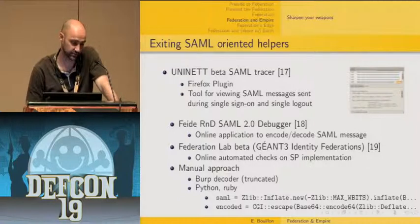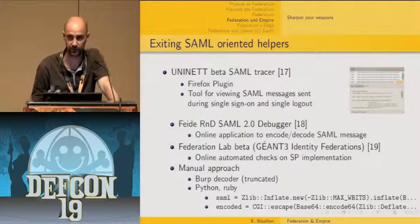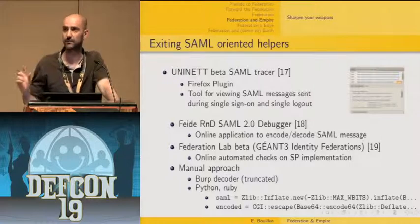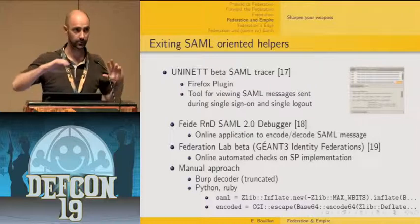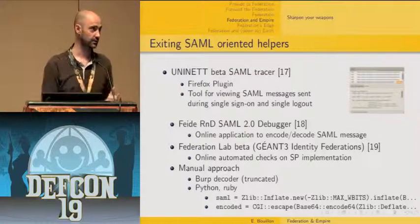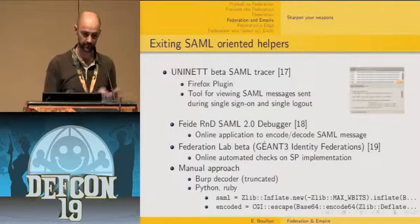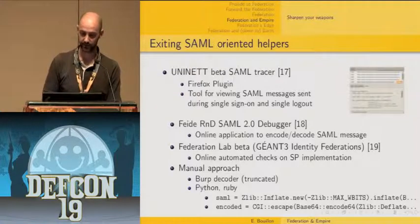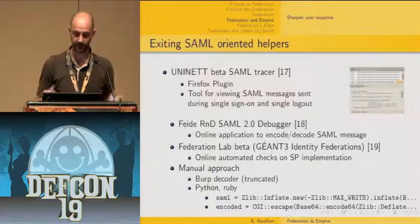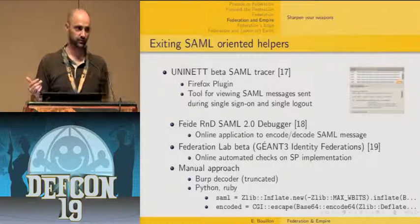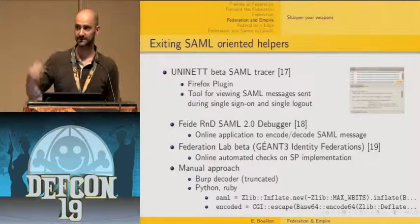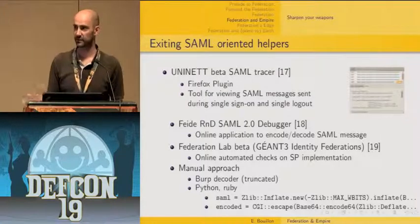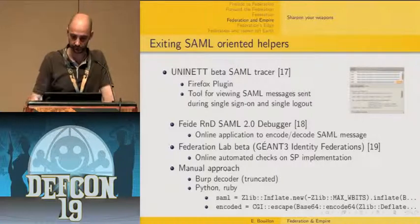There are already some existing tools that can help pen testers when dealing with SAML. First, the UniNett SAML Tracer, a Firefox plugin that allows you to see decoded SAML tokens your browser is receiving and sending. Then there's the Feide SAML Debugger, an online application where you submit a token either encoded or decoded and receive the reverse. The last one — really interesting — is provided by Day on 3 Identity Federation as part of their Federation Lab initiative: an online automated compliance checker for service provider implementations. You can point it at your SAML service provider implementation and get a compliance report against the standard.